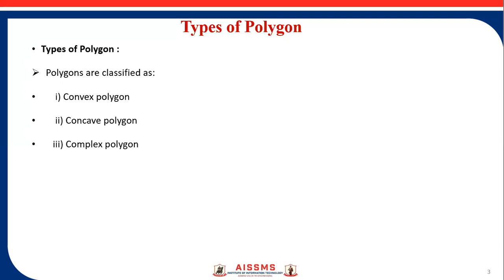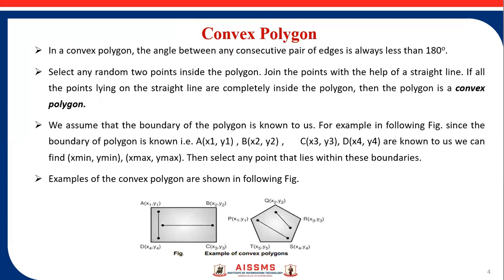For a convex polygon, if we select any random two points inside the polygon and join them through a line, all the points on that line are certainly inside the polygon. This is called a convex polygon.